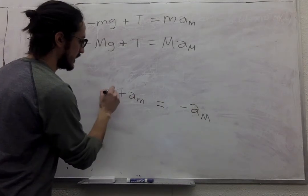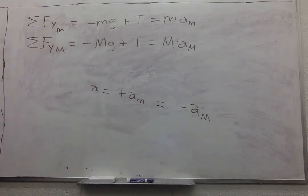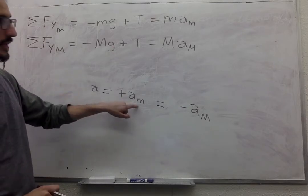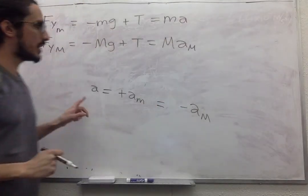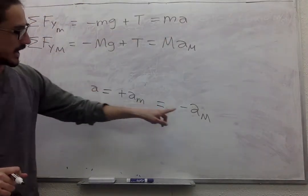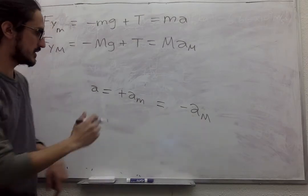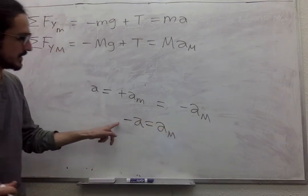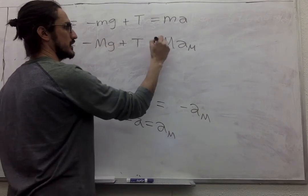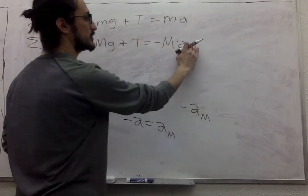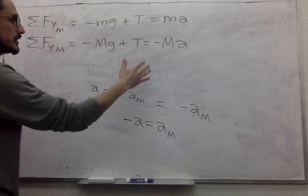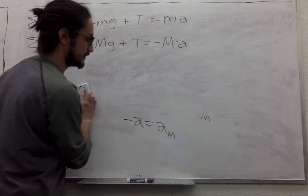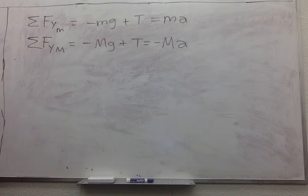And we can just call this, you know, a. So then we can replace a for little M, we just call it a. But a for big M is equal to minus a. So we put the negative in here. Now we can get rid of the subscript. So initially we had three equations, but we just implemented that one into the two to make it look clearer.